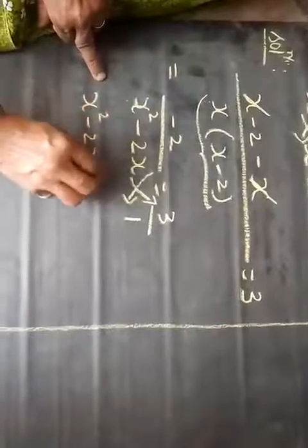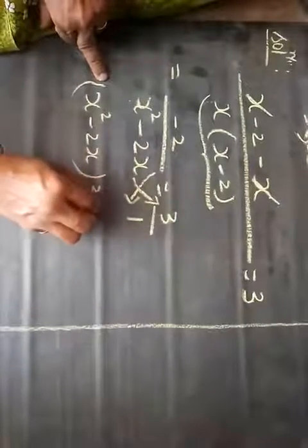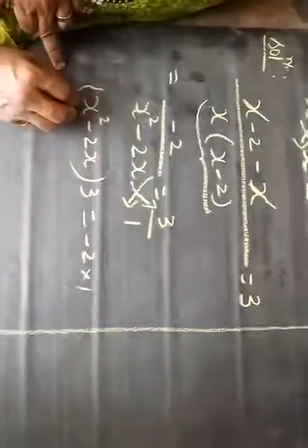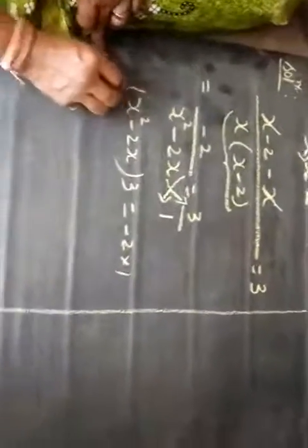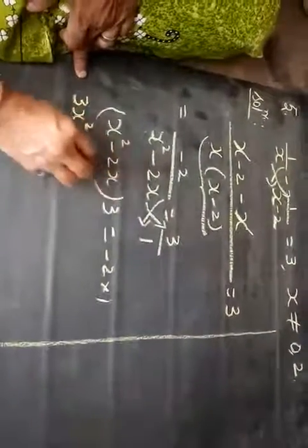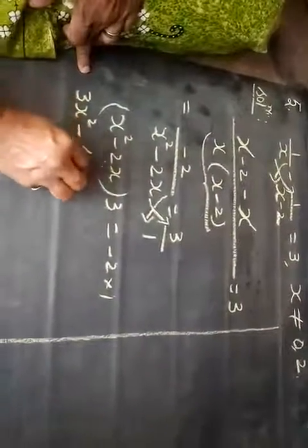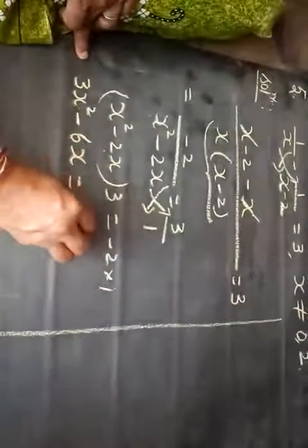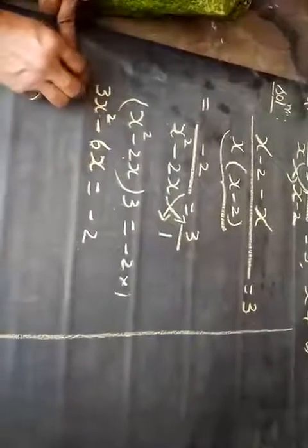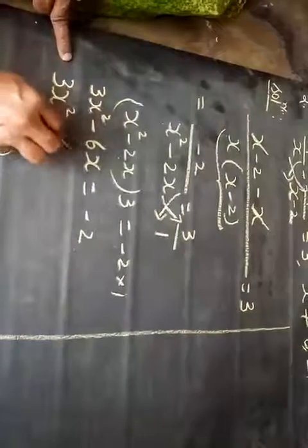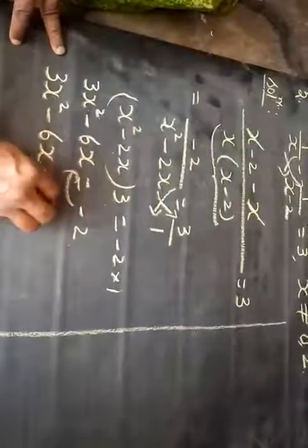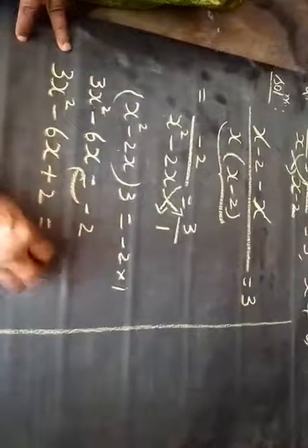Cross multiply: (x squared minus 2x) must be multiplied by 3, which equals minus 2 into 1. Remove the bracket: x squared into 3 gives 3x squared, minus 2x into 3 gives 6x, which equals minus 2. Bring to standard form: 3x squared minus 6x, taking minus 2 to this side it becomes plus 2, equal to 0.